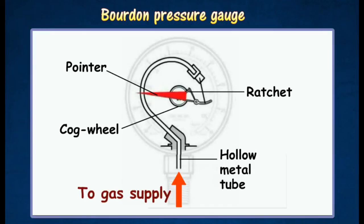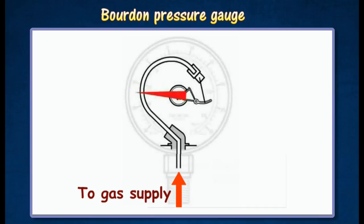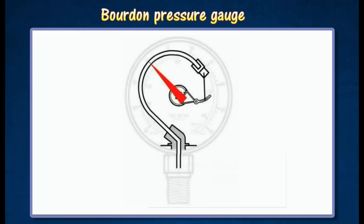When a compressed gas enters the curved tube, the tube tends to straighten out, thus causing the other closed end to move outwards. This movement is magnified by the lever arrangement, which turns the cogwheel that moves the pointer over a scale to indicate the pressure reading.